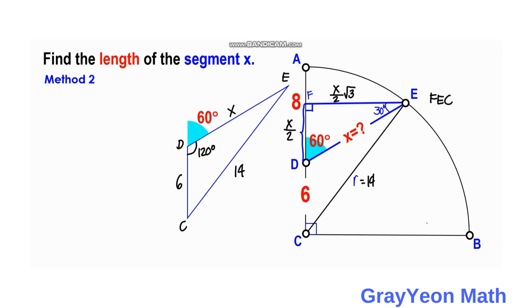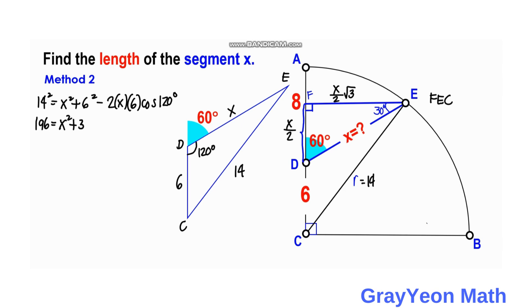Applying the Law of Cosines: 14² = X² + 6² − 2·X·6·cos(120°). Expanding: 196 = X² + 36 − 12X · cos(120°). Since cos(120°) = −1/2, the term −12X · (−1/2) becomes +6X. So we have 196 = X² + 36 + 6X.